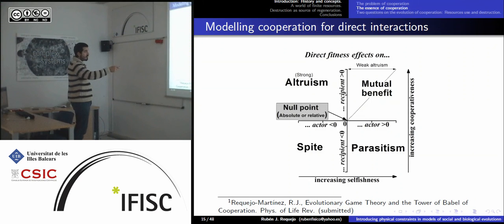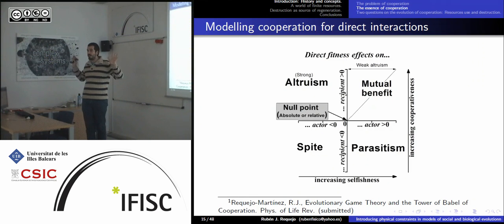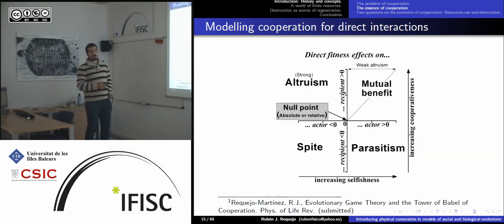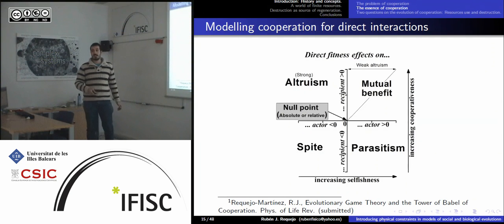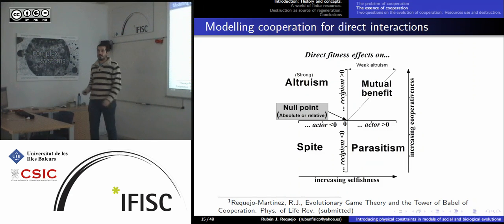Everyone knows the problem of altruism versus free riding. Free riders are individuals who receive benefits from others at no cost to themselves, while altruists pay a cost to benefit others. Parasites also create a prisoner's dilemma when interacting with free riders — it has similar features to the altruistic dilemma, but now the cooperative individual is the free rider who doesn't produce any benefit or impose any cost on themselves.